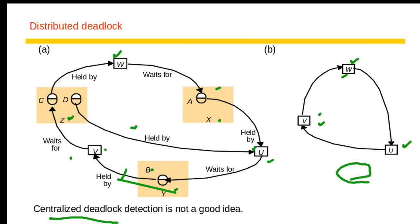In distributed systems, everything is done through message passing. For distributed deadlock detection, we share information between servers. Servers can share their local wait-for graphs with each other and then construct the global wait-for graph together to find out whether a deadlock has occurred.